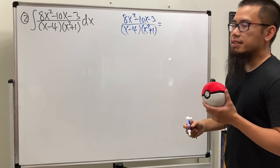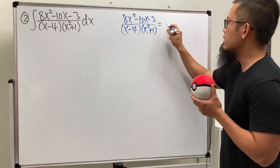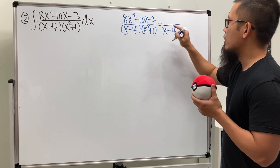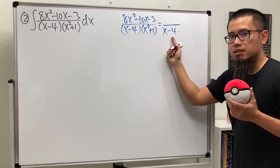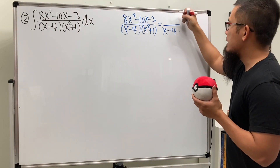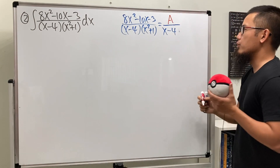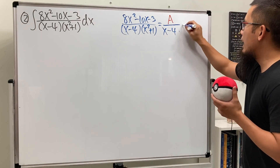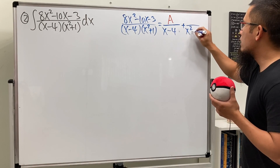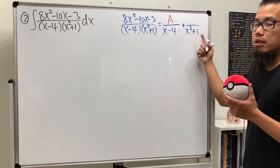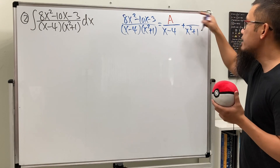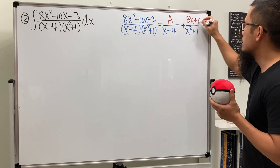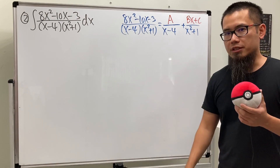We set up the partial fractions: for the denominator (x minus 4), which is linear, we put just a constant A on top. For the next fraction with denominator x squared plus 1, which is quadratic, we put a linear term Bx plus C on top.